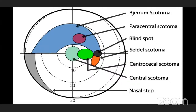Paracentral scotoma is near to the center but not exactly at the center. Then we have the blind spot, which is the physiological one. Then we have sickle-shaped scotoma. Ceco-central scotoma lies between the central scotoma and the blind spot. Central scotoma is exactly at the center. Nasal step lies at the nasal periphery.